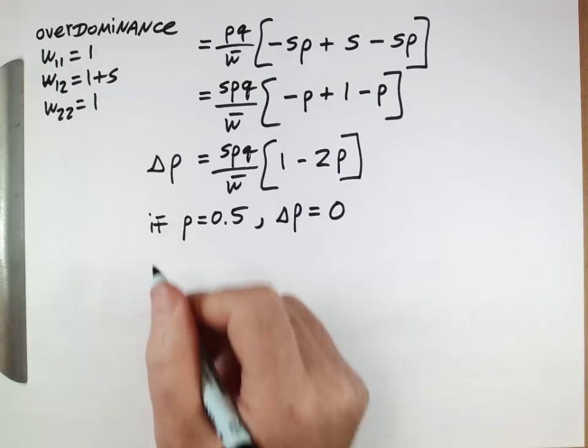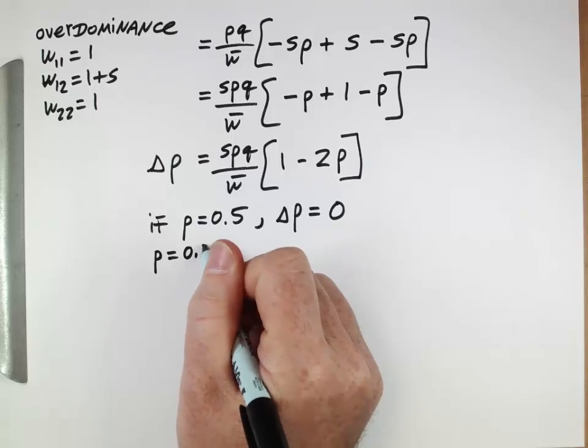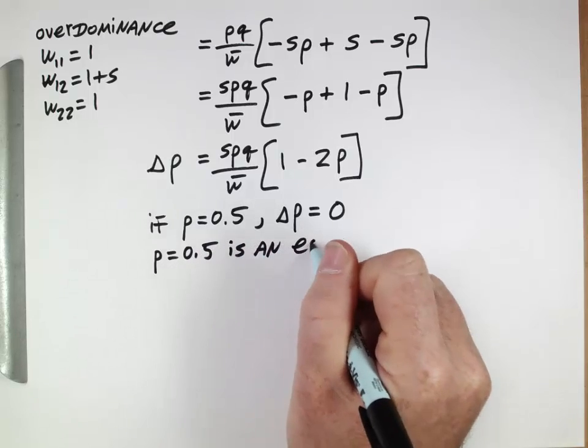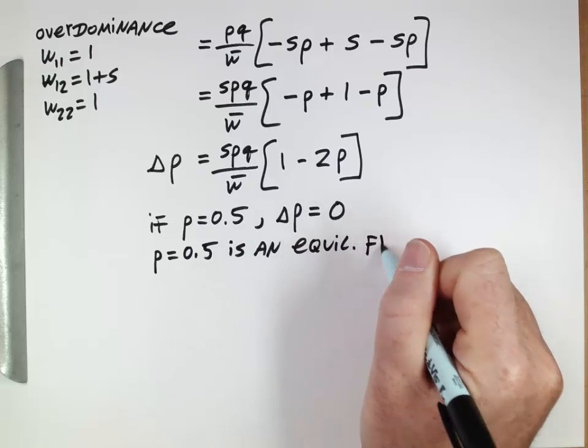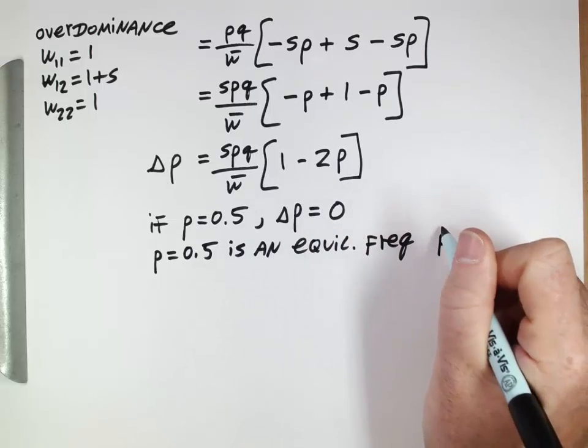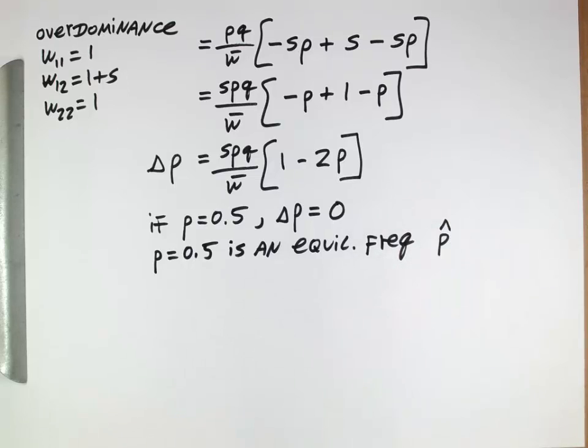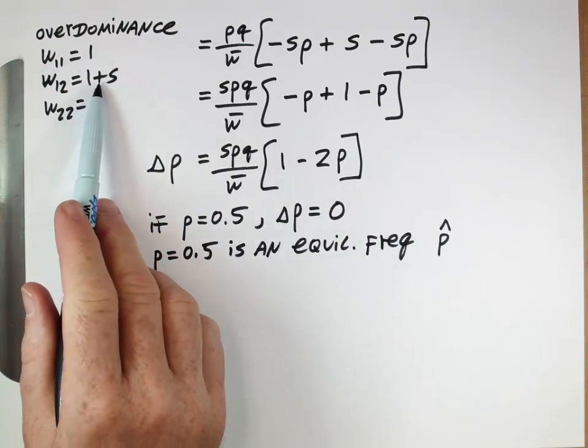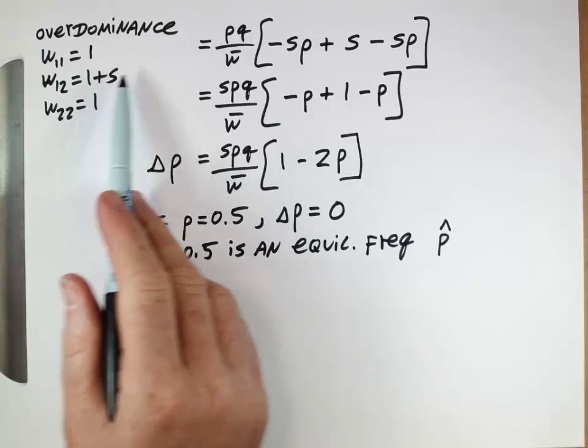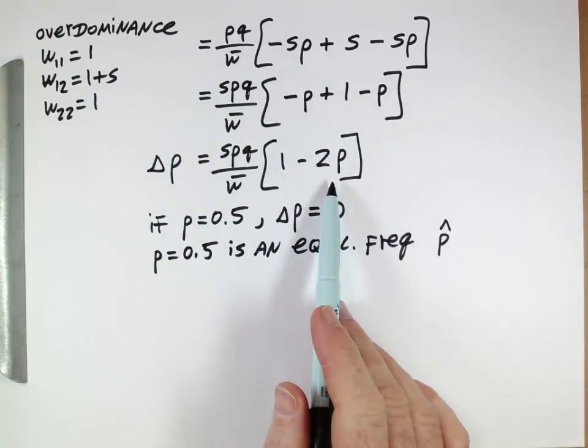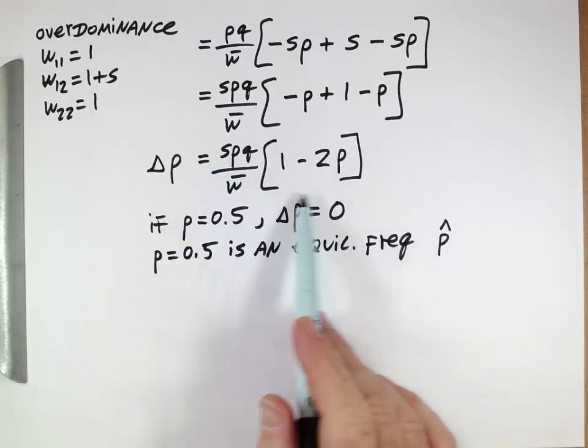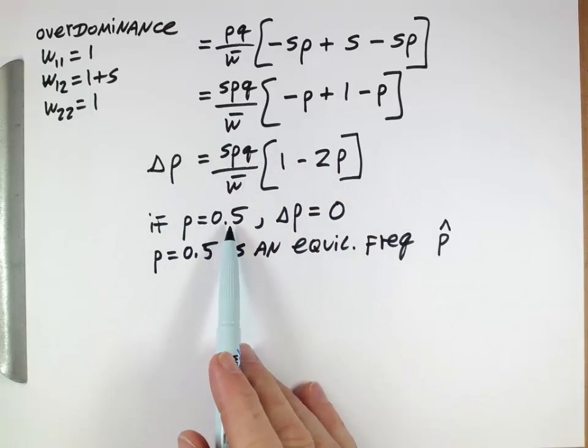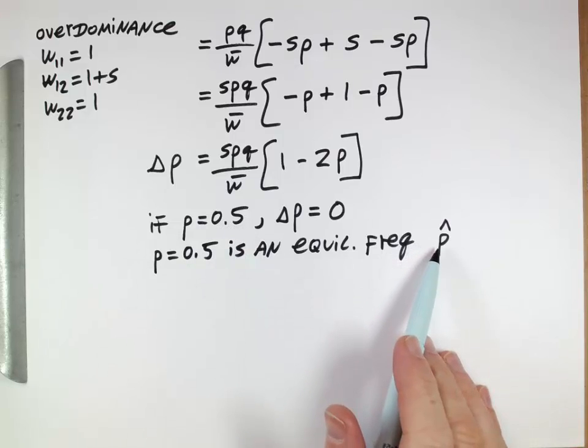And so when this occurs, we say that P of 0.5 is an equilibrium frequency, and we refer to that special frequency with a little caret over the top of it. So the thing to notice about this overdominance situation is that if the heterozygote has the highest fitness, the delta P equation ends up turning into this form. And then with this equation, delta P is equal to 0 when P is 0.5. And that's an equilibrium. So if the frequency ever gets to 0.5, delta P of 0 means the frequency will stay at 0.5 indefinitely.